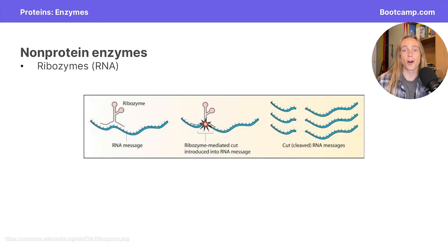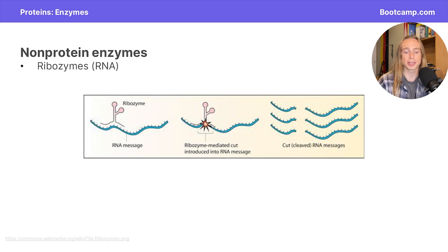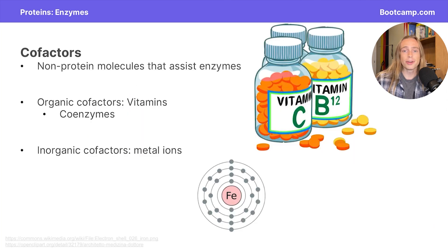While the majority of enzymes are made of proteins, there are a few examples of non-protein enzymes. One such non-protein enzyme is known as a ribozyme, which will be discussed later on. In order for enzymes to function properly, they often need things known as cofactors.